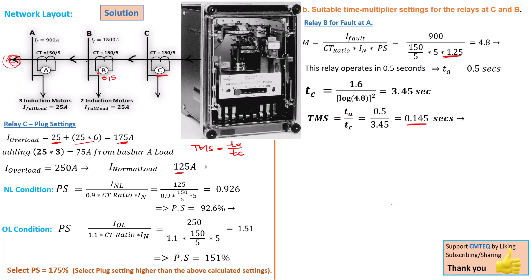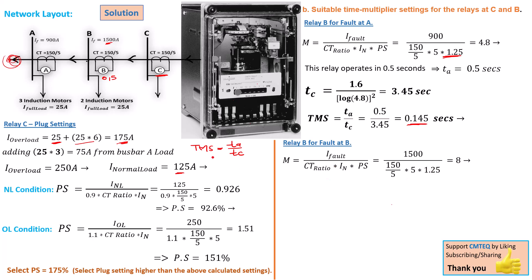This TMS value is based on the actual operating time of 0.5 seconds for relay B for a fault on bus bar A. Now we need to find the actual operating time of relay B for a fault on its own bus bar — the fault is much larger there, so we expect a much shorter operating time. Using the same plug setting of 125% for relay B, the fault on bus bar B gives M = 8. Then TC = 1.6 / log(8²) = 1.96 seconds. Important: never round these values — we are dealing with very short time periods, and rounding will result in incorrect relay settings. Round to two or three decimal places at most, but never to a whole number.